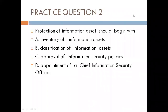When we look at all the options, inventory of information assets is very important. For you to protect an asset, you need to know that asset exists. But we have to have a framework that will guide everything — whether we're going to have inventory of assets, facilitation, or attend to CISO. All these should be drawn from the information security policy approved by the board. So the first step is to have an approved policy in place.